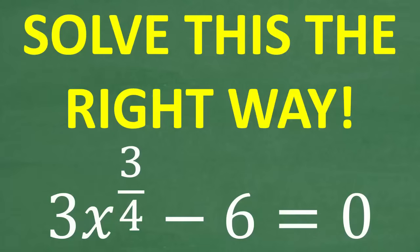The equation we're looking at is what we call a rational exponent equation, and we want to solve this without the aid of a calculator. The problem is 3x to the 3/4 power minus 6 is equal to 0. If you can figure this out, go ahead and put your answer into the comment section.